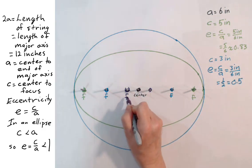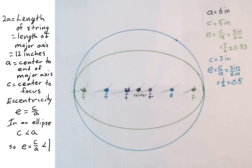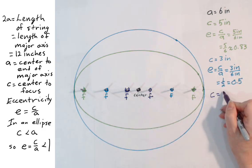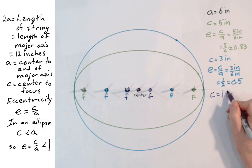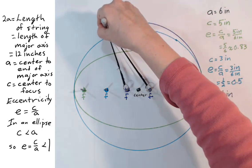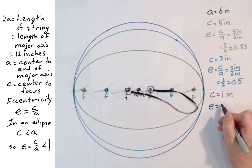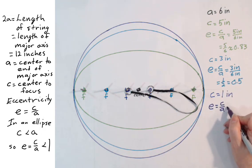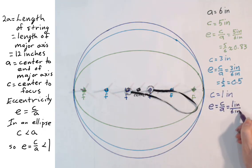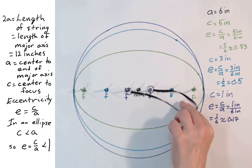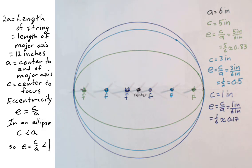Now we move the foci even closer to the center. Using these foci, the distance c from the center to one focus is 1 inch. This gives us yet another ellipse. Eccentricity is c divided by a, so for this ellipse, eccentricity will be 1 inch over 6 inches, which is about 0.17. Notice that as the eccentricity gets smaller, the ellipse gets closer to circular.